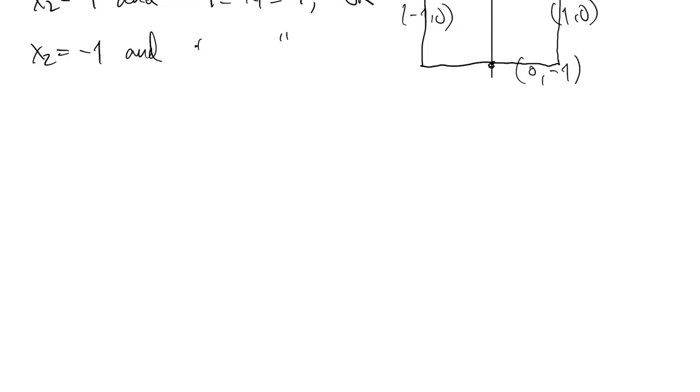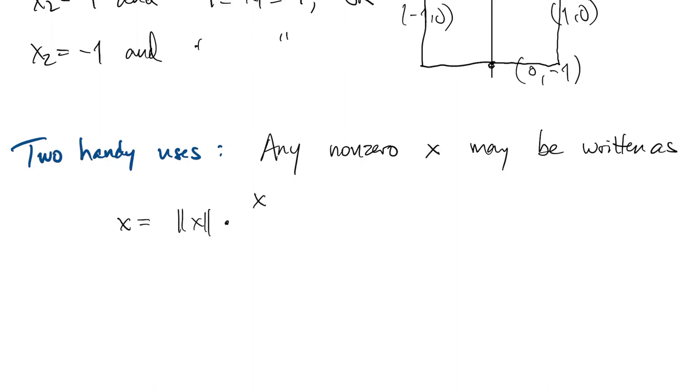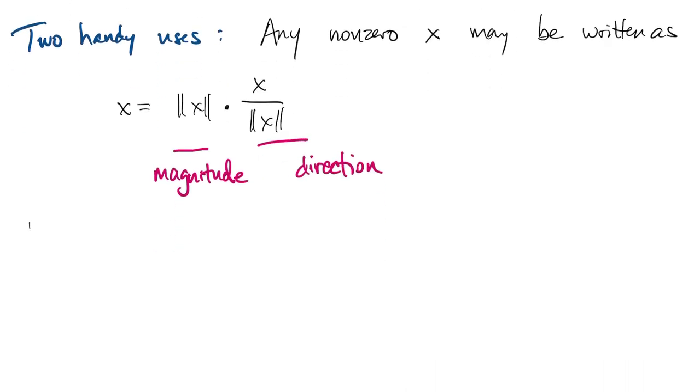There are two things that we might want to be able to do with a norm, even before we get to condition numbers. So one is to just point out that any non-zero vector x can be trivially written as the product of the norm of x times x divided by norm of x. That's kind of obvious, but what this is is a magnitude direction form. The norm gives you the magnitude of the vector, and then this part is a unit vector, which gives you the direction.